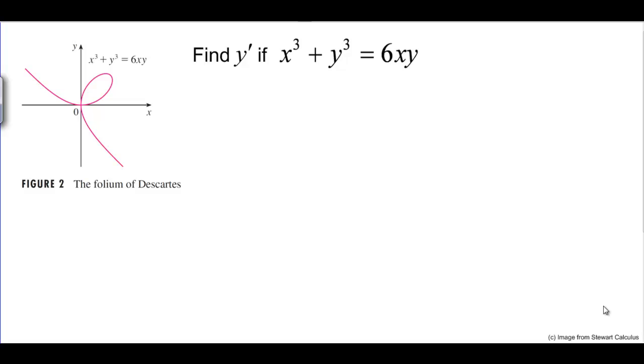Let's use implicit differentiation to find dy/dx, y prime of x cubed plus y to the third equals 6xy. This equation is actually known as the Folium of Descartes and looks like this graph over here.